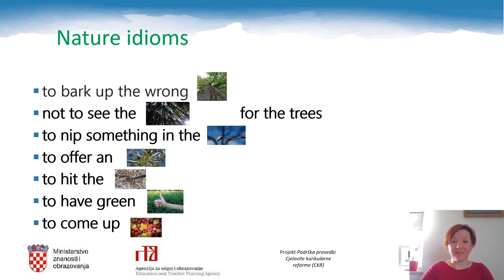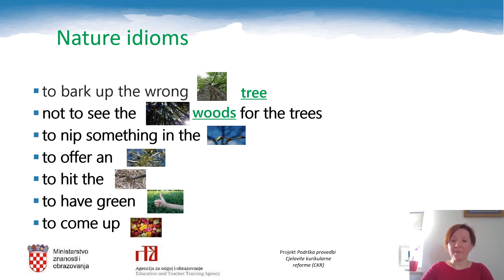Now that you've revised the words or learned them, let's try to use them in idioms. Take a look at the sentences and the pictures. Which word comes here? To bark up the wrong tree. Not to see the forest for the trees. To nip something in the bud. To offer an olive branch.